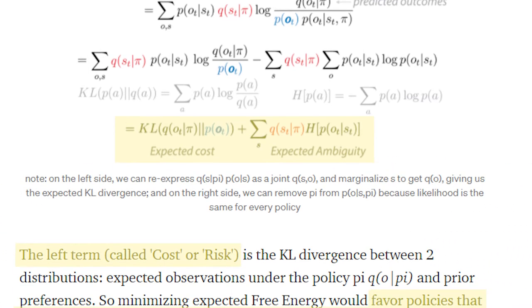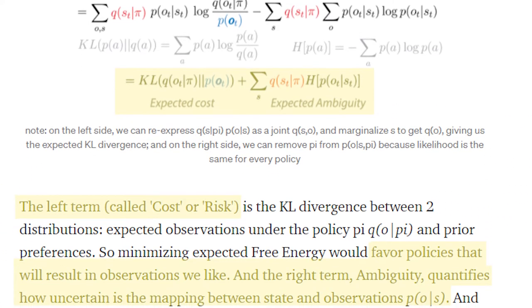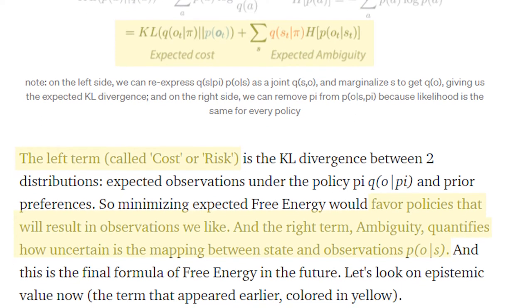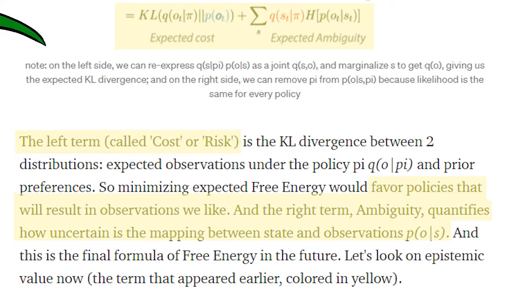To quote the tutorial again, because I think this is the sort of thing I might be learning to understand for months or years. The left term, called cost or risk, favors policies that will result in observations we like. And the right term, ambiguity, quantifies how uncertain is the mapping between state and observations.